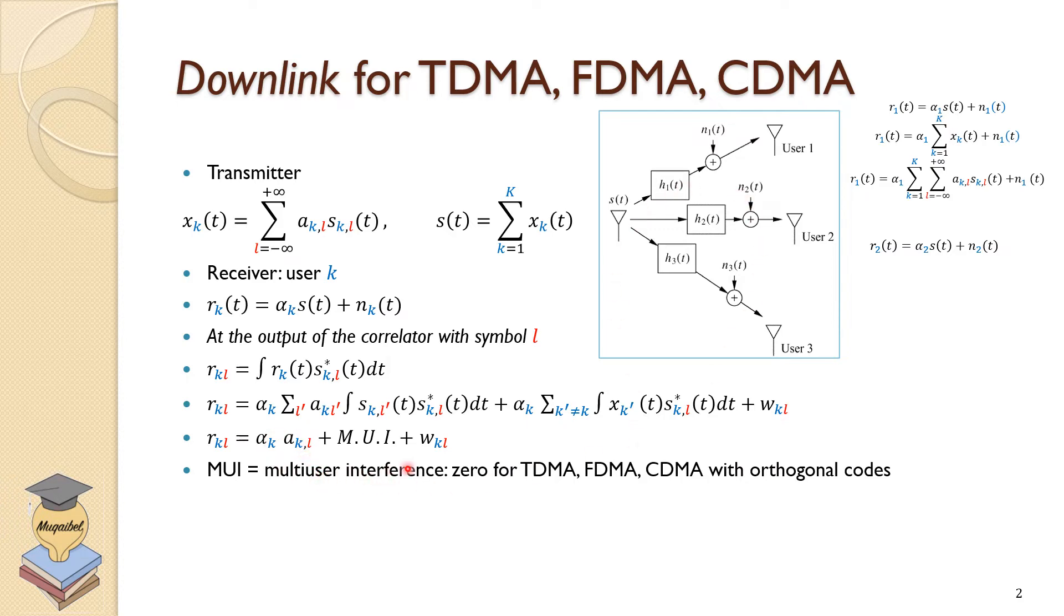The model for the downlink is shown here. We're going to receive the intended signal, multi-user interference plus noise. If you're doing perfect TDMA or FDMA or CDMA with orthogonal codes, then we'll get zero interference. This term will cancel out. Over real life, we cannot guarantee being 100% orthogonal due to synchronization issues and out-of-band emission.